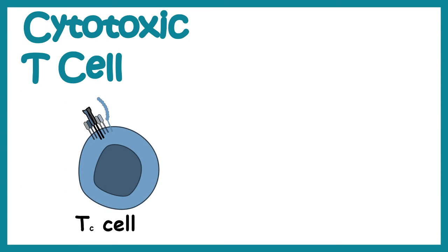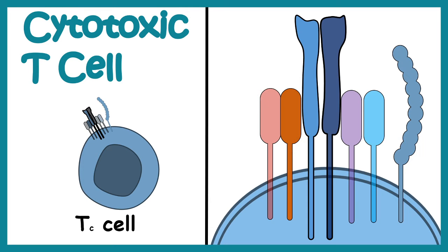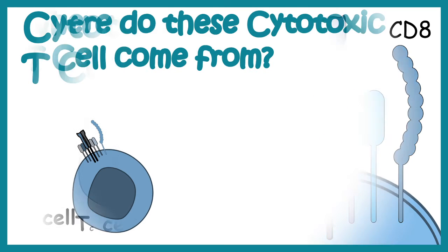The key component of cell mediated immunity is the cytotoxic T cell. Cytotoxic T cells have an alpha-beta T cell receptor but CD8 as a coreceptor, which is different from T helper cells.